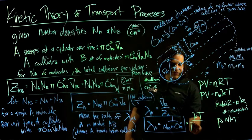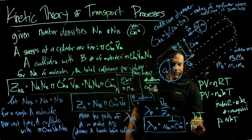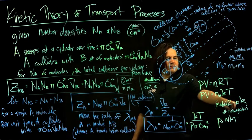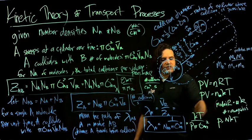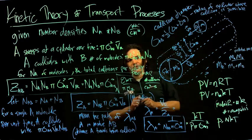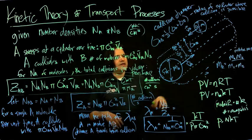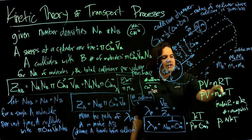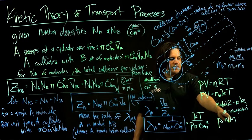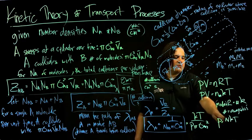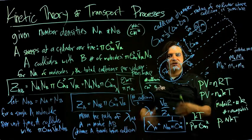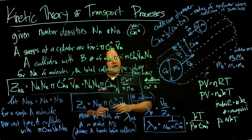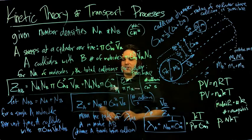The mean free path depends on the pressure times the collision cross-section. The mean free path depends on the pressure: you can apply a different version of the ideal gas—N = P / KT—so macroscopically the pressure of the system is a direct measure of the number density. The mean free path depends on how many are there, and by the ideal gas equation that shows up macroscopically as the pressure of the system and the temperature.